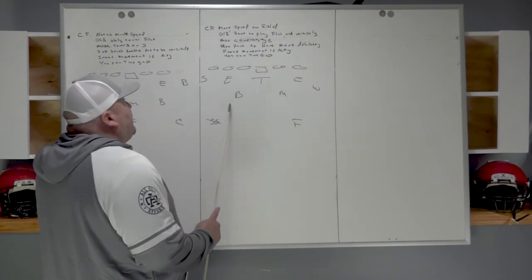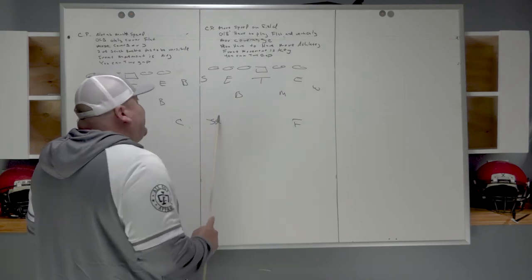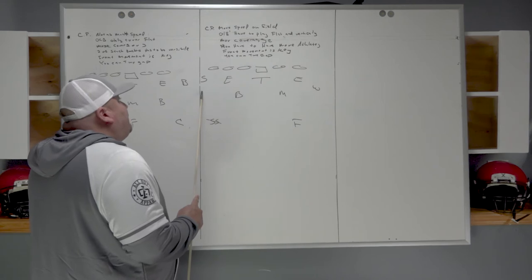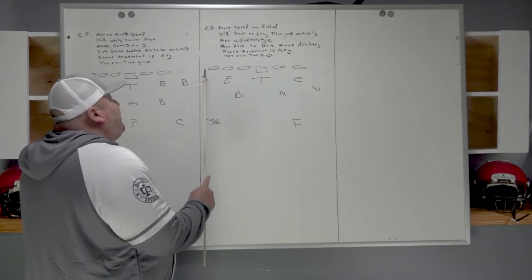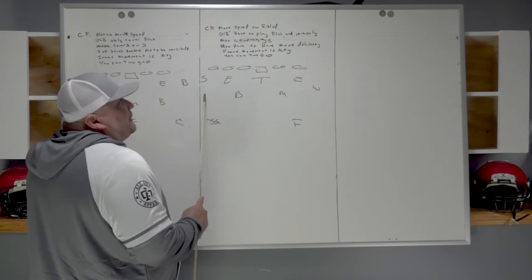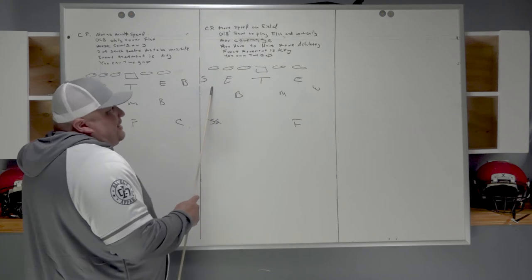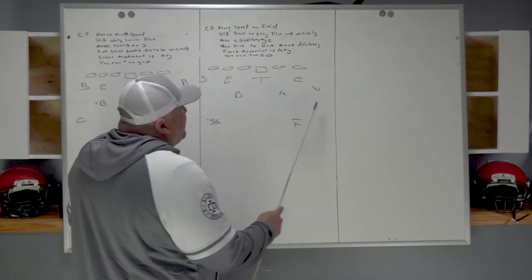The main differences here: Sam and Will have to be able to play the flats, they also have to be able to play the hook, the curl area. The Buck needs to be detachable. The strong safety needs to be a versatile player as well, because if we're getting a hard run team and we have to move them up, we could get to an 8-man defense by bringing the safety up.